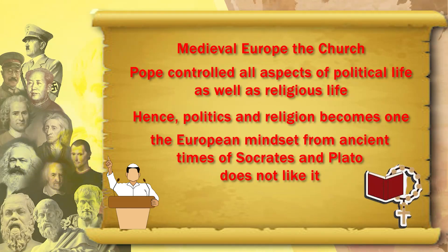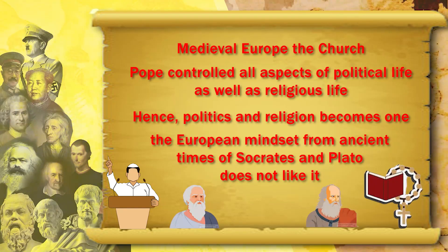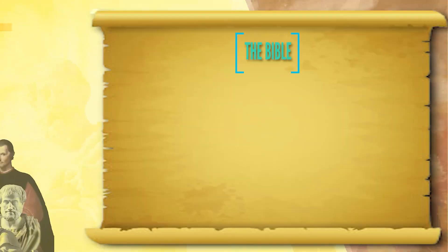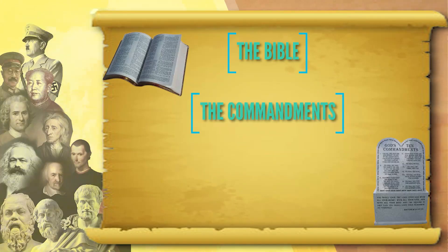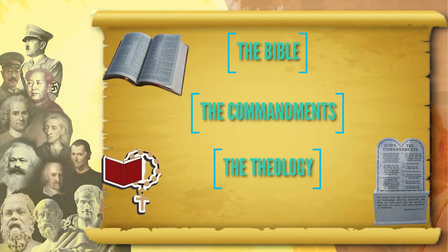But the European mindset, as we have seen from pagan times — from the times of Socrates and Plato — does not like this. So from the medieval period onwards, there is a constant struggle between the church and the king or political authority. The political authority does not want the church poking its nose into day-to-day administrative activities and telling the king what to do according to the Bible, the commandments, or theology.